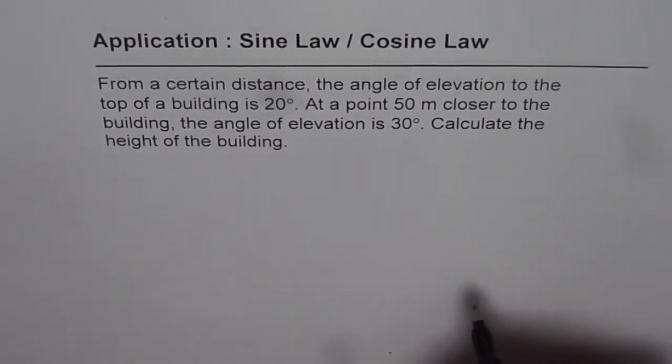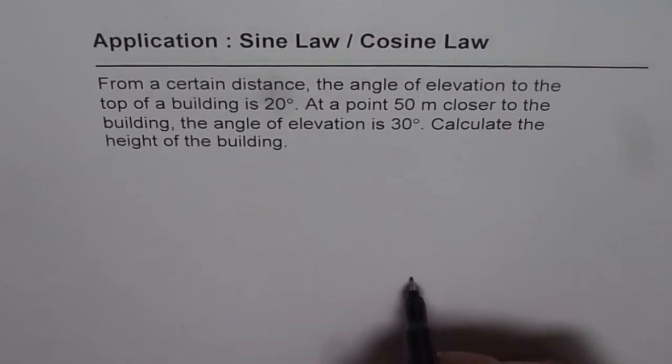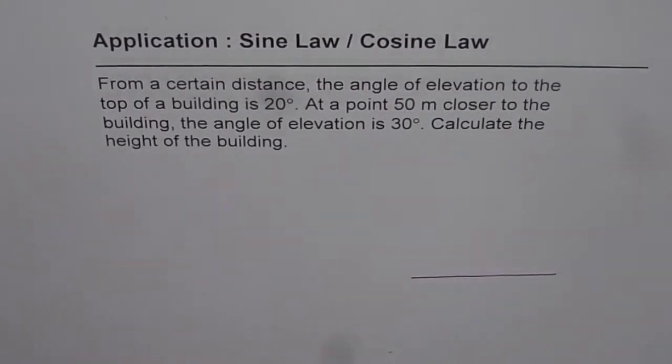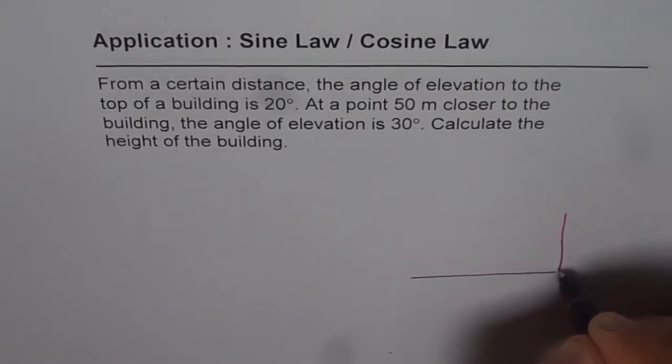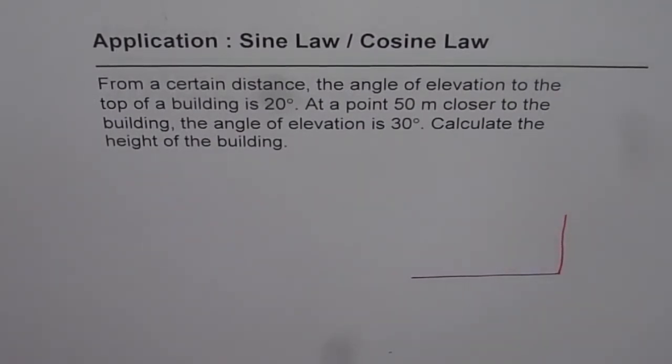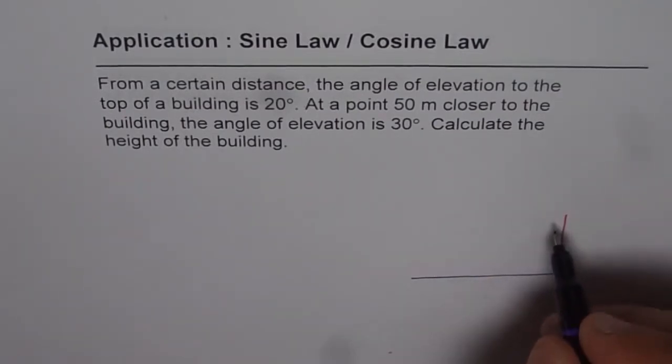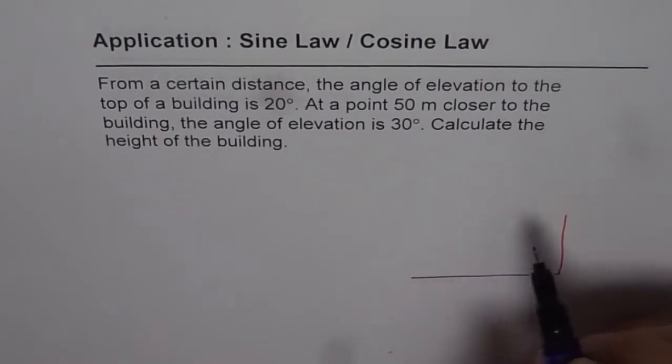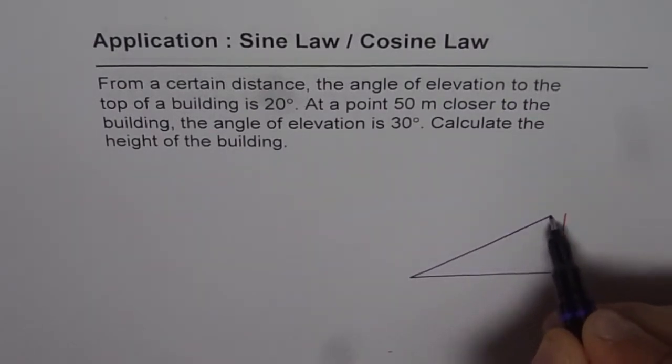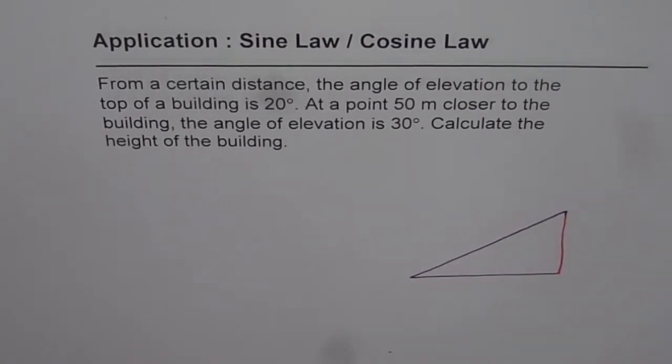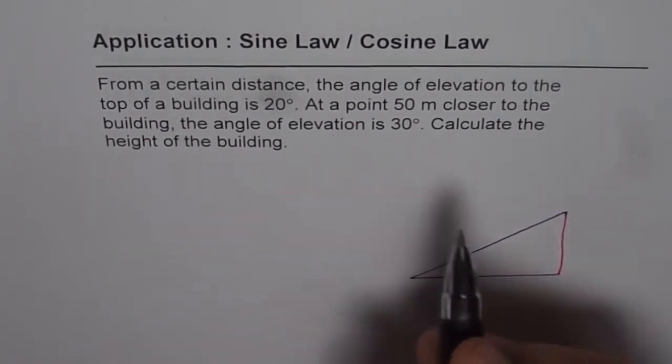Let us first sketch the scenario. Let's say that is the path and let us have a building here. So that is the building. Now the question is that the angle of elevation from a point is 20 degrees. So let us say, let us join this with the top of the building. So that gives us the angle of elevation of 20 degrees.